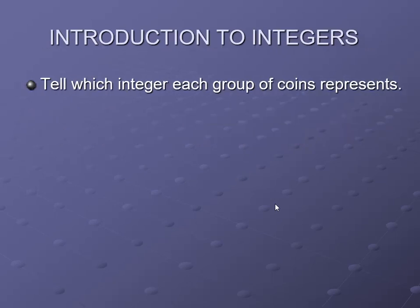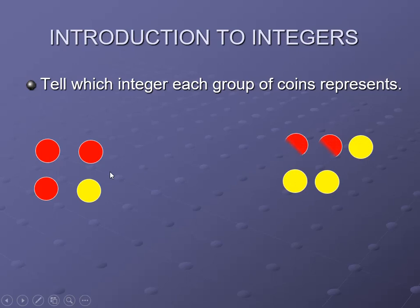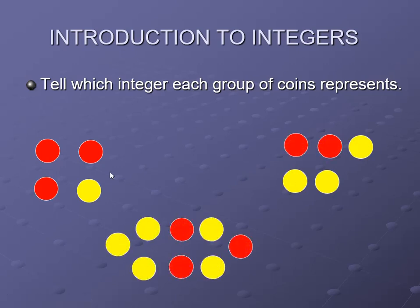Now look at each group of coins and tell which integer it represents. How many negative coins are there, how many positive, and what integer does it represent? For the first group: when one positive and one negative pair cancels, the result is minus 2. The red coins represent negative numbers.